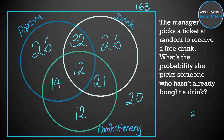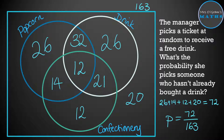Skipping ahead to a question you could be asked: a manager picks a ticket at random to receive a free drink — what's the probability she picks someone who hasn't already bought a drink? We want the number of people outside the drink circle: that's 26, 14, 12, and 20, which comes to 72. So the probability is 72 out of 163.